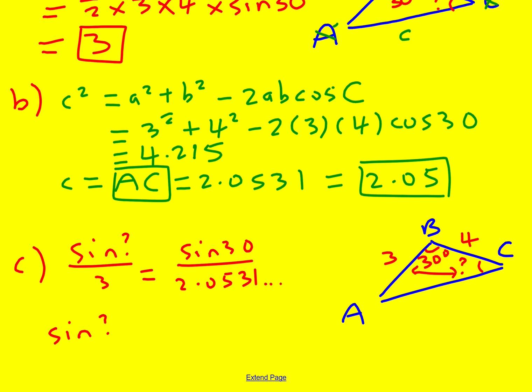That's an application of the sine rule. Sine of the angle divided by the opposite side equals sine of a different angle divided by the opposite side. So it makes sense to use this 30 and the side we just found because we know them. We want to find this one, so we use that one. So we don't use the 4 or this other angle that we don't know. So sine question mark is going to be 3 sine 30 over 2.0531.